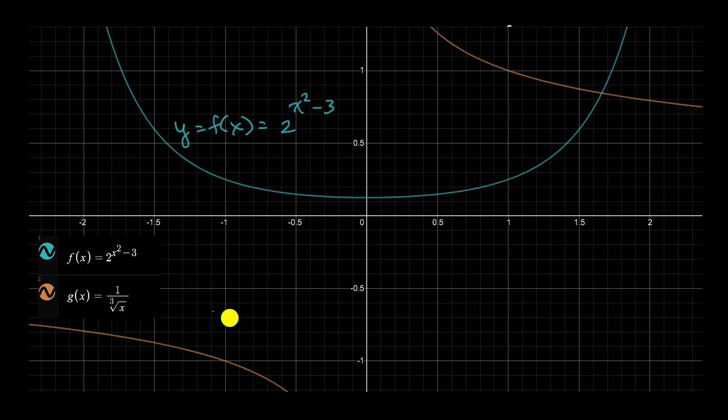And then in this yellowish color I have y is equal to g of x which is equal to one over the cube root of x and we can see where they intersect. They intersect right over there.